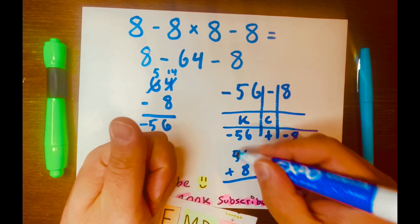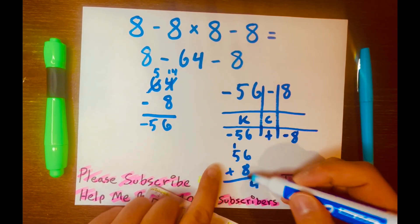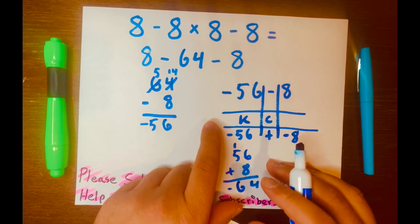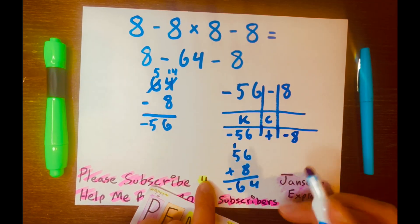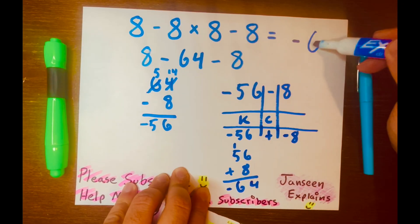11, 12, 13, 14. And so 5 plus 1, 6. And we know it's a negative because we said same signs. Add them both and keep the same sign. So it's negative. So your answer is negative 64.